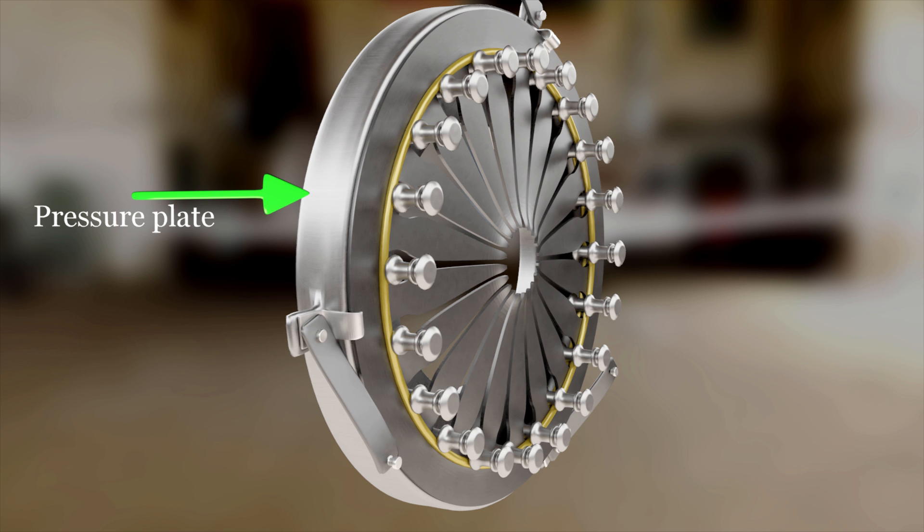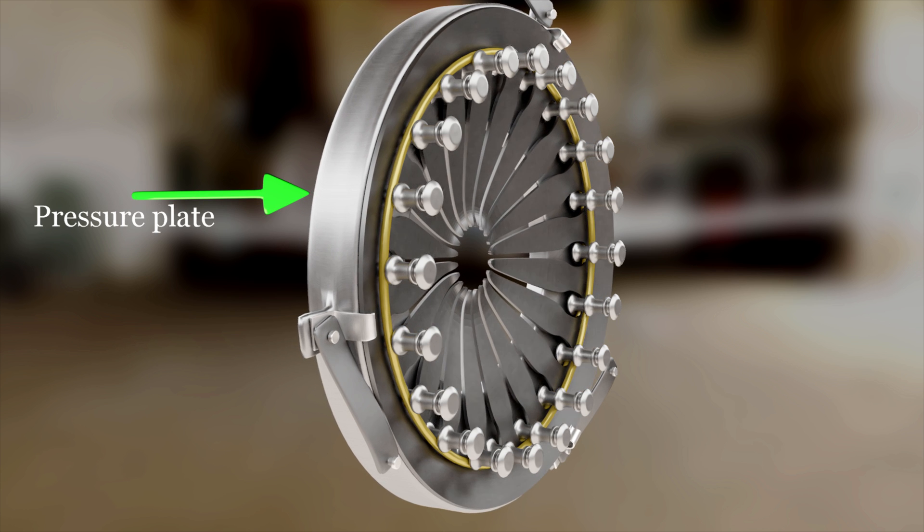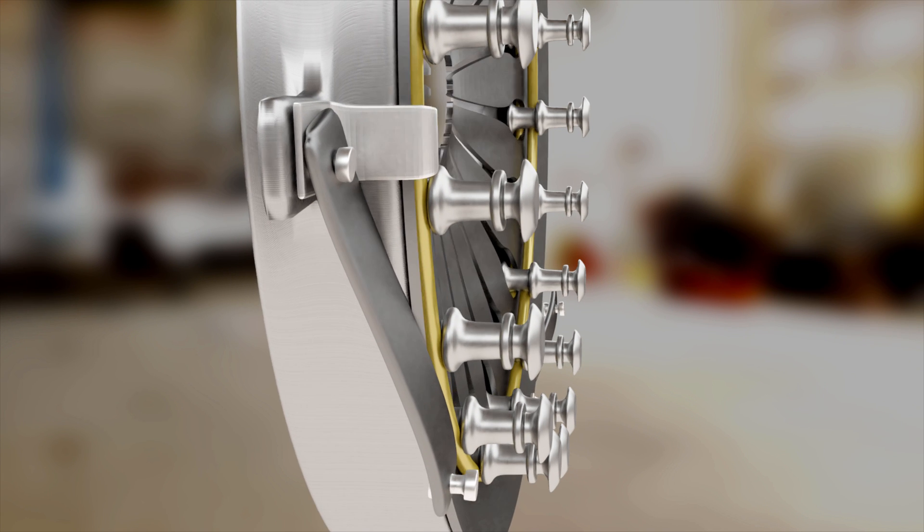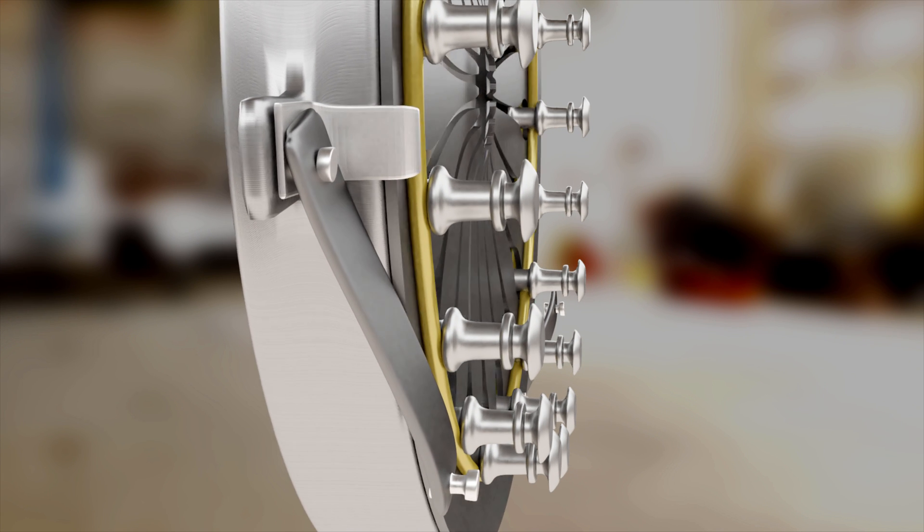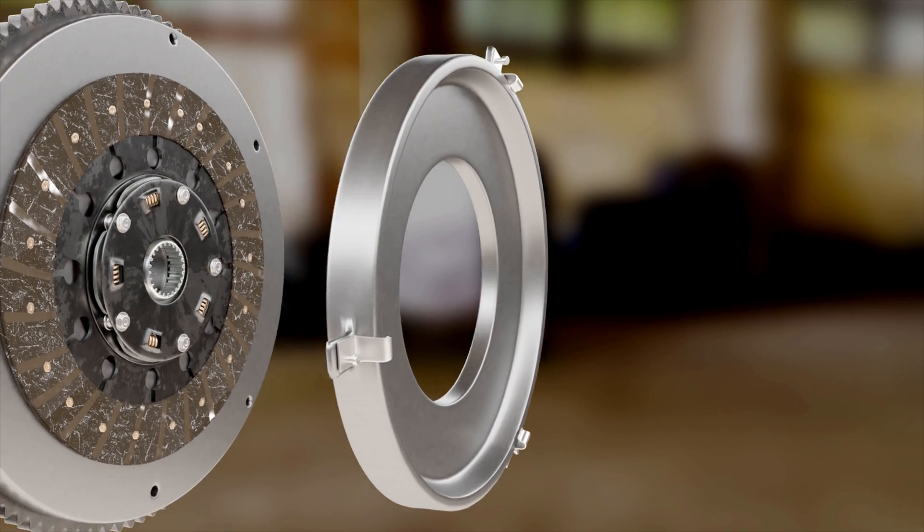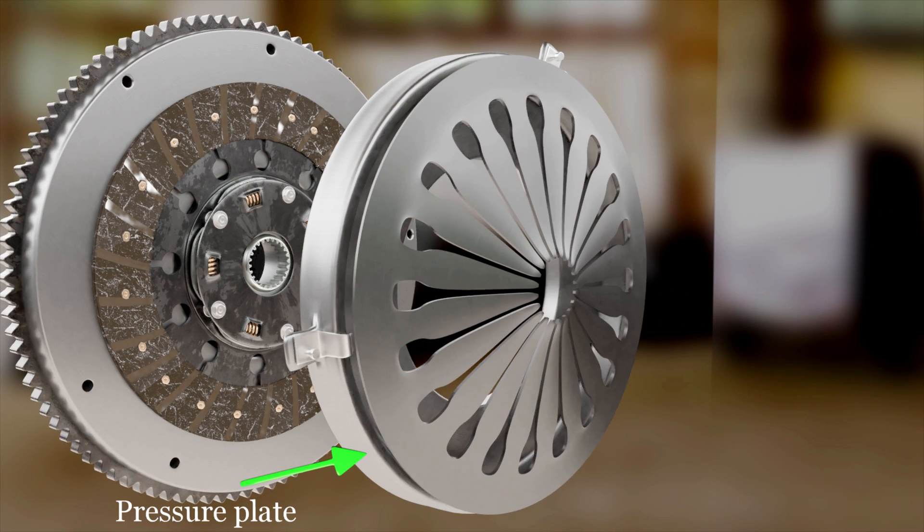As the pressure plate is connected to the outer edge of the diaphragm spring, this assembly of pressure plate, diaphragm spring, and clutch cover is called the pressure plate assembly.